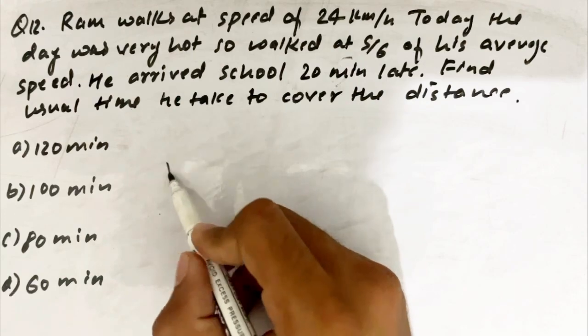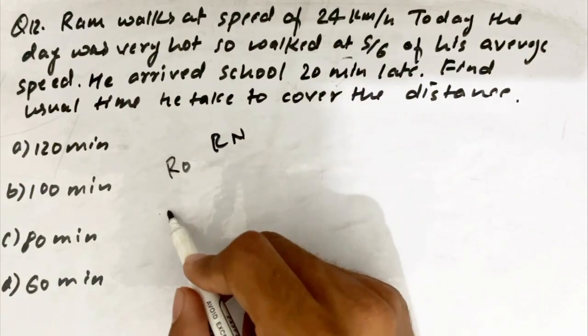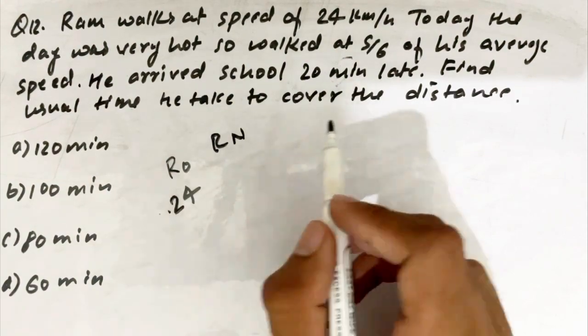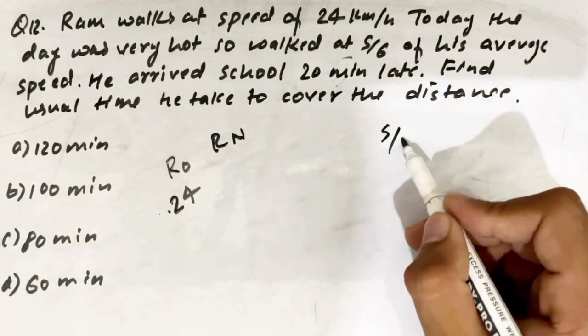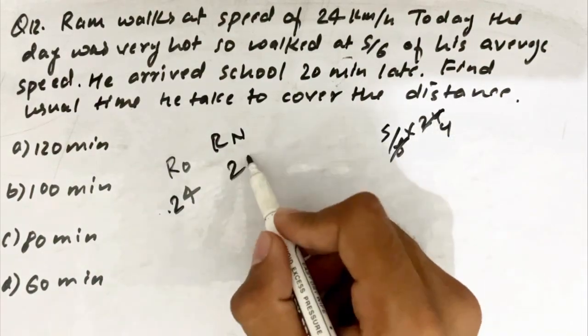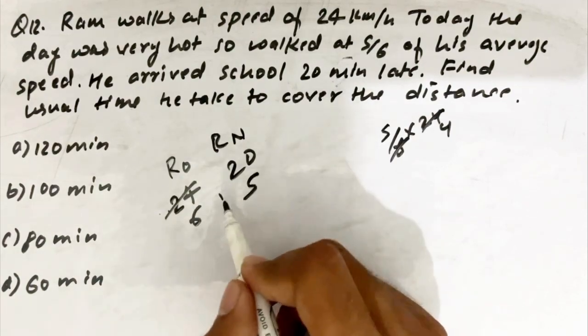What is the speed ratio? How much is the old speed and new speed? What is the old speed? What is the new speed? 5 by 6 of average speed. How much is the average speed?